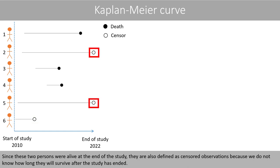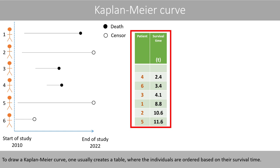Since these two persons were alive at the end of the study, they are also defined as censored observations, because we do not know how long they will survive after the study has ended. To draw a Kaplan-Meier curve, one usually creates a table where the individuals are ordered based on their survival time.